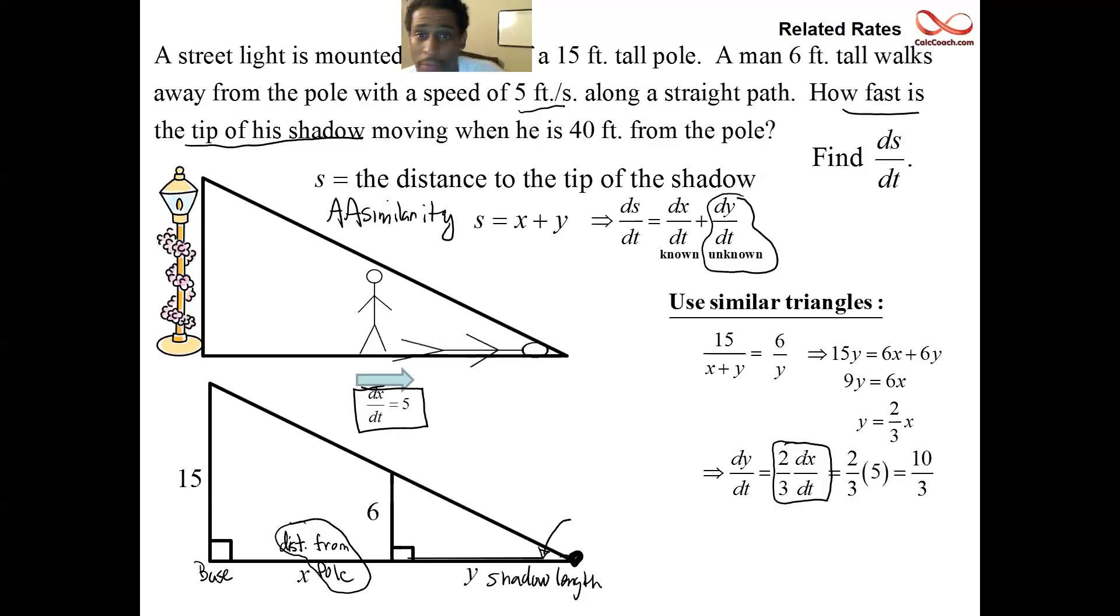And then we're one step away from being done. DS/DT equals the 5 from DX/DT and the 10/3 from DY/DT. Add them together, 15/3 and 10/3, grand total of 25/3 unit feet per second.